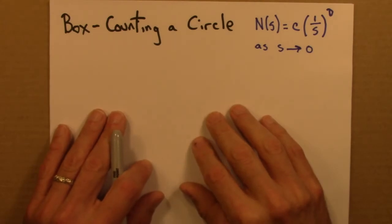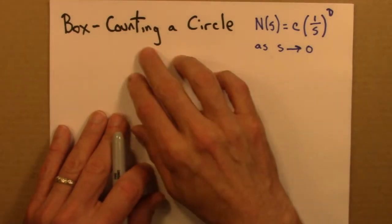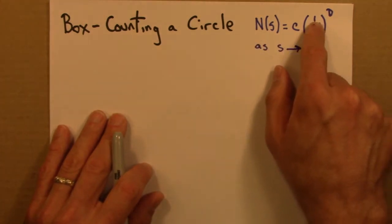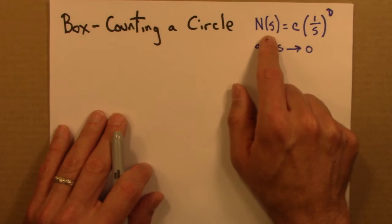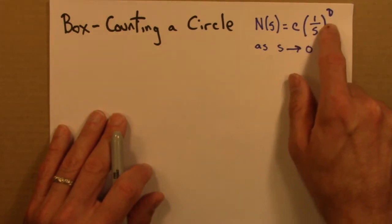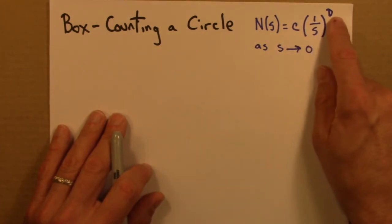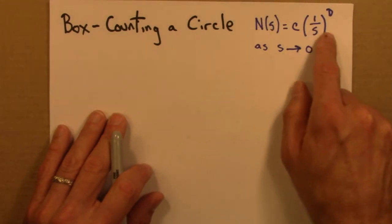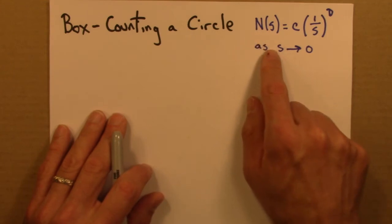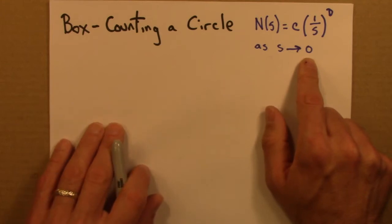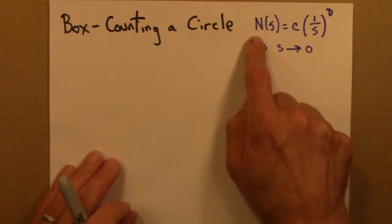In this video, we'll revisit the question of the box counting dimension for a circle. Remember that this is the relationship we're working with: N is the number of boxes needed to cover a shape where the boxes have side S, given by this relationship where D is the box counting dimension. This equation is strictly only true as S gets smaller and smaller, closer and closer to zero, so we want to look at pretty small boxes.